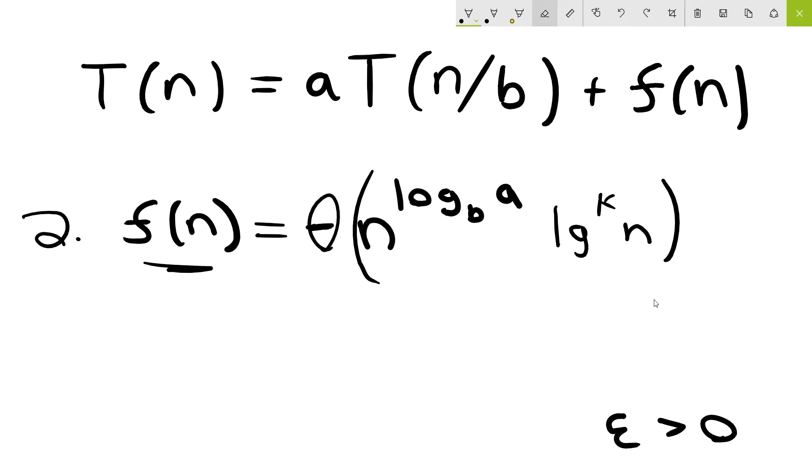And then so if this is the case, the asymptotic runtime is going to be bounded by theta of n log base b of a times log to the k plus one n. So it stays the same as the tight bound except we have an additional factor of log n.